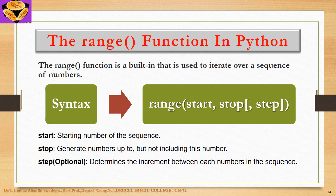The range function in Python: the range function is a built-in that is used to iterate over a sequence of numbers. The syntax of range function is range(start, stop, step). The parameters are: start - starting number of the sequence; stop - generate numbers up to but not including this number; step - optional, determines the increment between each number in the sequence.